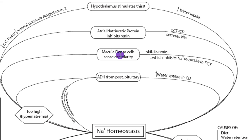The macula densa cells are going to sense too much sodium at the distal convoluted tubule, which will be interpreted as a lot of sodium in the diet or a high GFR — high GFR because fluid flowed through the tubule system too fast to allow sodium reabsorption, indicating high blood pressure. In either case, the macula densa cells will signal to constrict the afferent arteriole to slow GFR, and inhibit the JG cells to reduce renin, thereby lowering fluid volume and blood pressure.